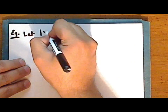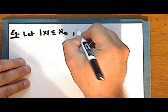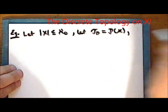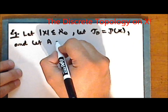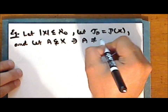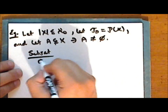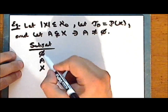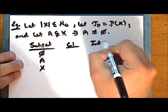So let the set X be countable. Let tau sub D be the discrete topology. And let the set A be a non-empty proper subset of the space. Again we'll consider the entire set, the empty set, and the non-empty proper subset A, and look at the closure and the interior of the closure.